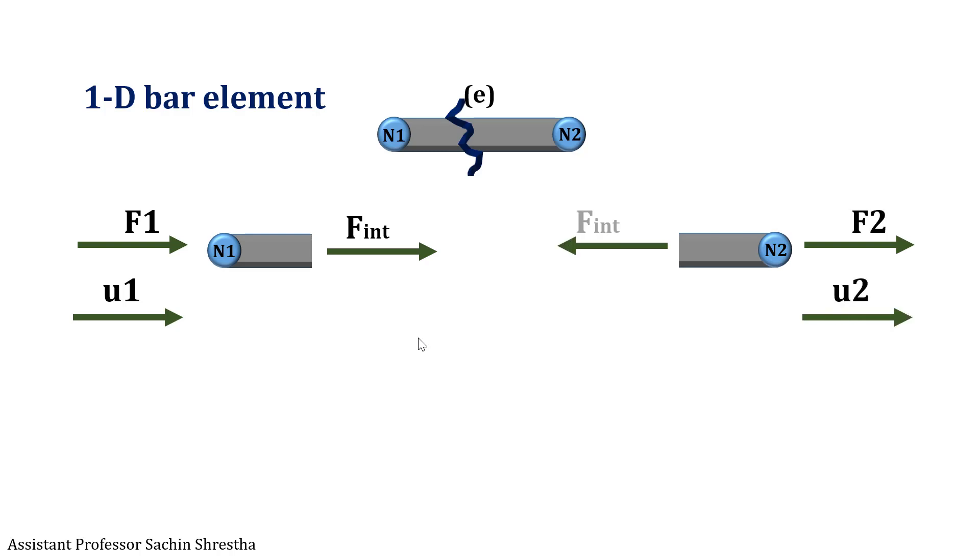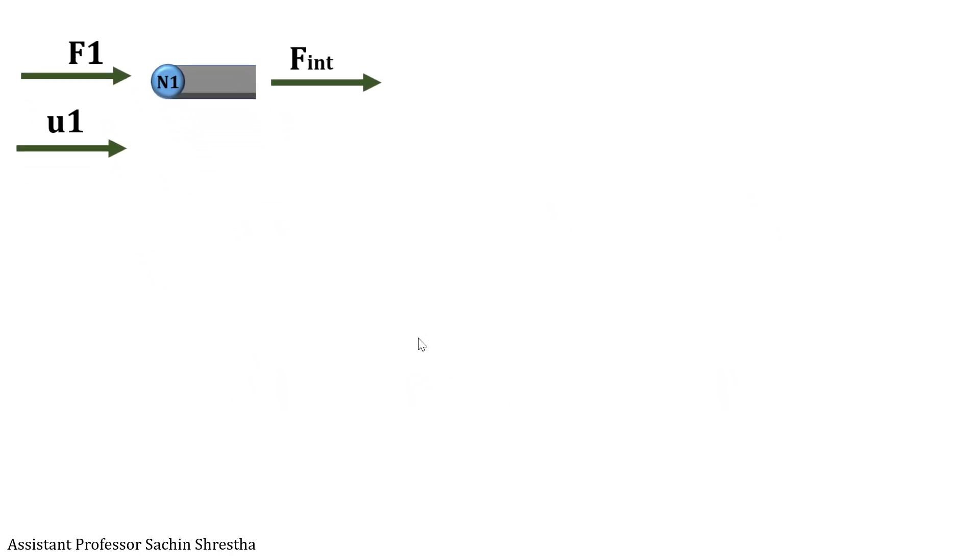Considering the section having the first node, the internal force FINT can be calculated as sigma times A, where sigma represents the stress. We have another formulation for stress as epsilon times E, where epsilon represents the strain and E the Young's modulus.